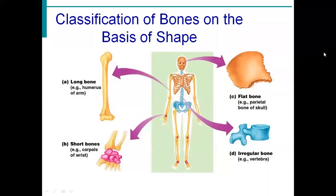Welcome back students. I am Dr. Animes Jai. In the last video, I discussed about the structure and anatomical features of long bones. The bone is classified into four main types: long bone, short bones, flat bone, and irregular bone. The basic example of a long bone is the humerus, and its structure was already discussed in the last video.